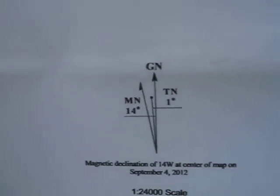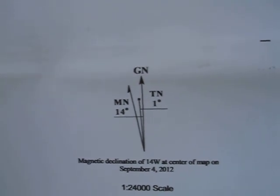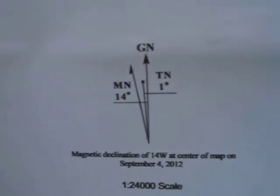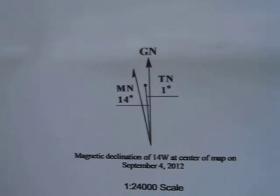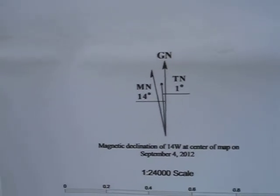As you can see here, west of the Grid North is 1 degree. The Magnetic North is 15 degrees.